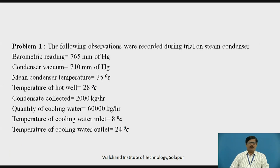The first problem: the following observations were recorded during a trial on a steam condenser. Barometric reading equals 765 mmHg, condenser vacuum 710 mmHg, mean condenser temperature given as 35 degree Celsius, temperature of hot well 28 degree Celsius, condensate collected equals 2000 kg per hour, quantity of cooling water collected is 60,000 kg per hour, temperature of cooling water at inlet is 8 degree Celsius, and temperature of cooling water at outlet is 24 degree Celsius.